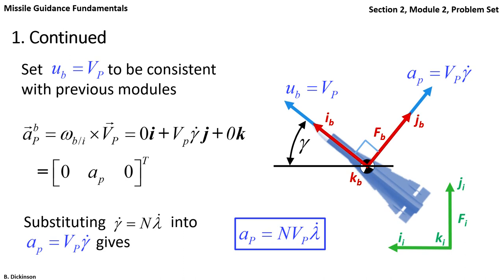So there you have it, and the result makes sense. Because if by definition the velocity vector is aligned with a body i direction and constant, then the acceleration vector, ap, it can have no component in that i direction. Hence it has to be perpendicular to the i direction.